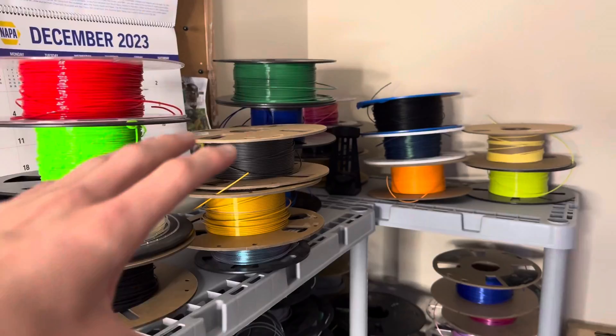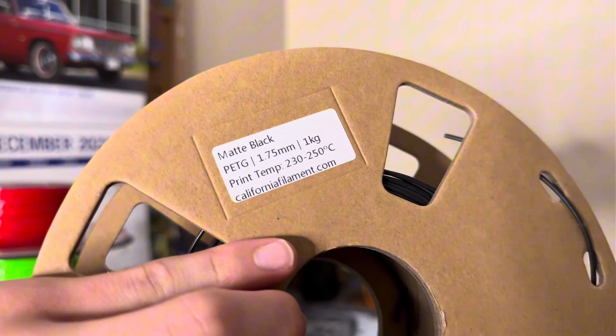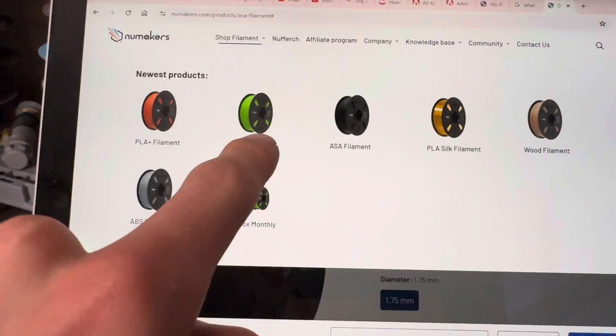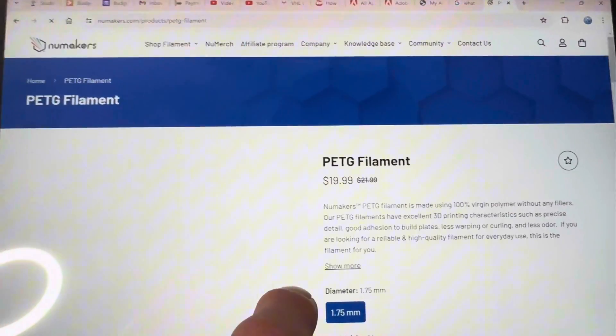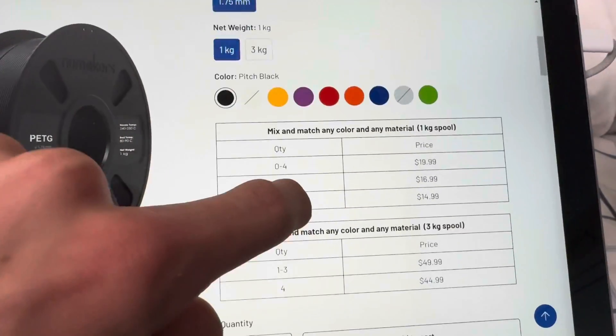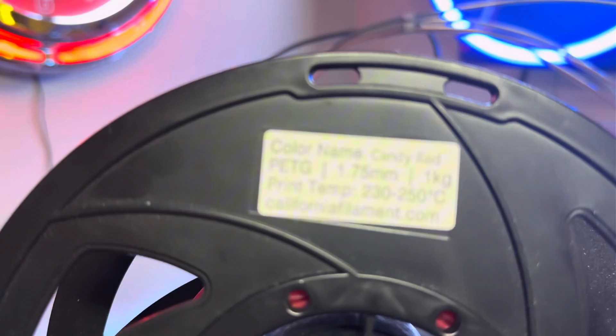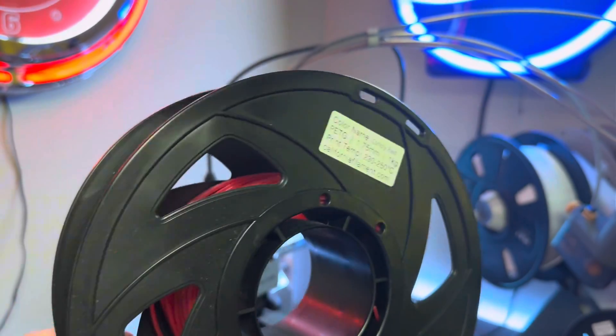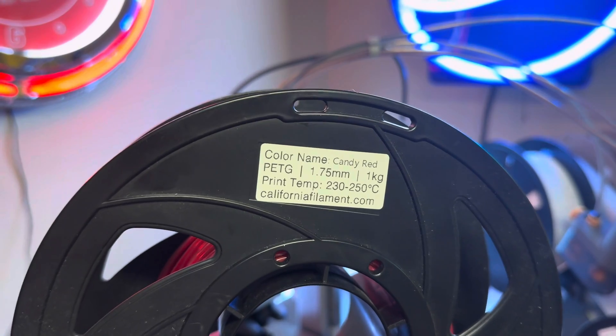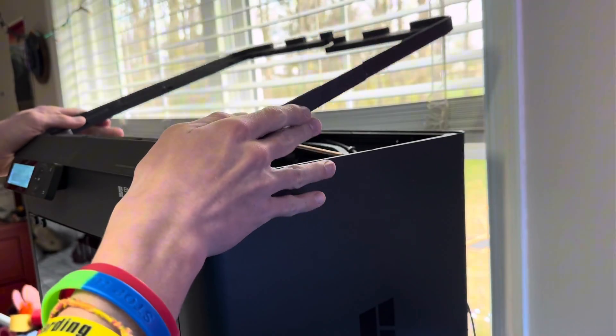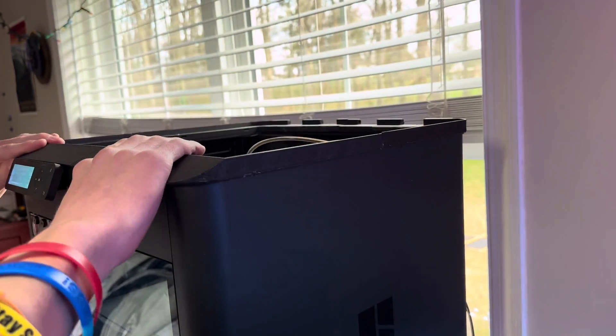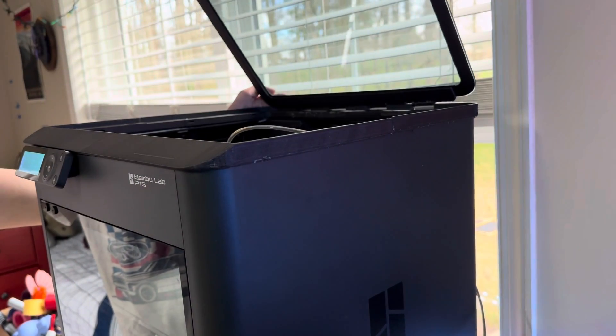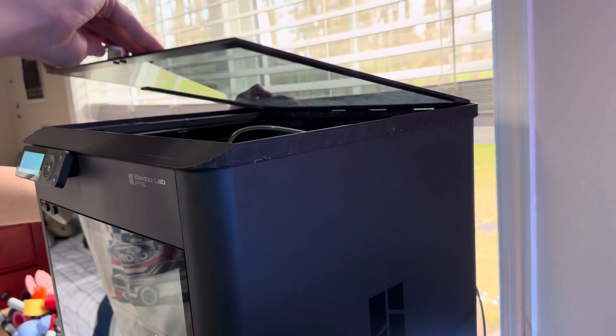The next filament on the list is PETG. This is another super common filament and a ton of people use PETG. Generally, PETG is a bit more expensive than PLA, but not by very much. PETG is great for high strength and high heat resistant parts. PETG is less of a filament that you would use on something like a detailed model and more of a filament that you would use for something that's actually going to be functional. PETG is pretty easy to print with, however, it does often warp.